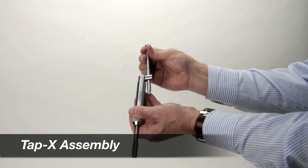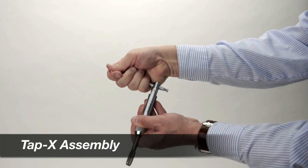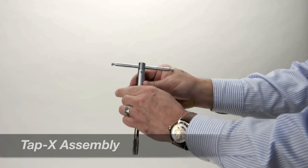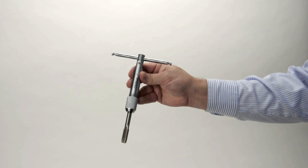Pull out the T-bar handle, slide it up, and then turn the T-bar handle until it is perpendicular to the wrench body. Slide the handle halfway back, and the tap is now locked firmly in the TAP-X wrench and it is ready for use.